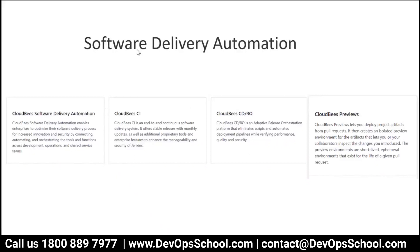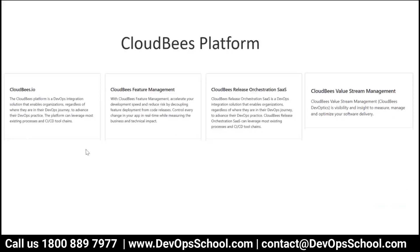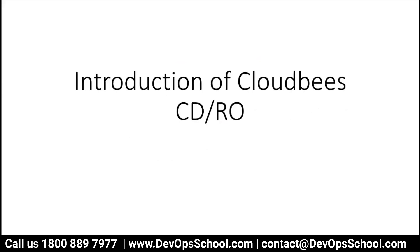They have one product called Software Delivery Automation, which includes the CI product, the CDRO product, and preview products. For this session we are going to focus on CDRO. They also offer CloudBees Feature Management, CloudBees Release Orchestration as SaaS, and Value Stream Management. Our sessions will focus primarily on CDRO.